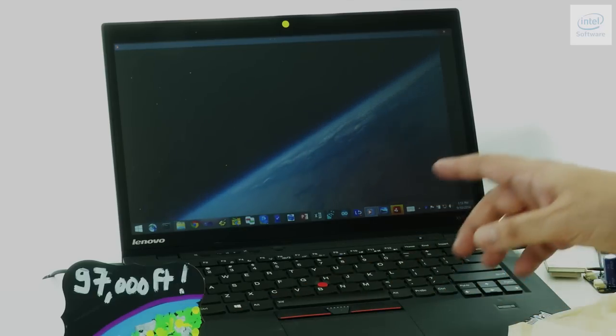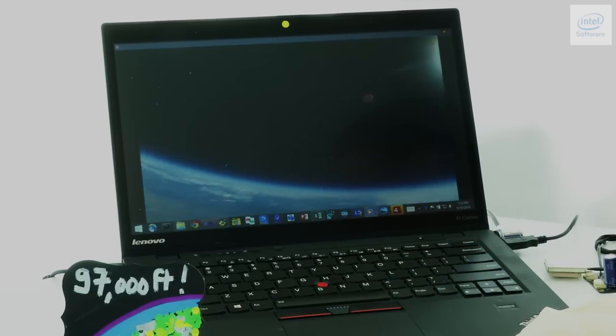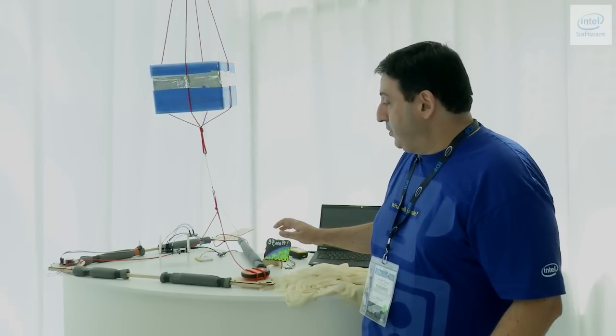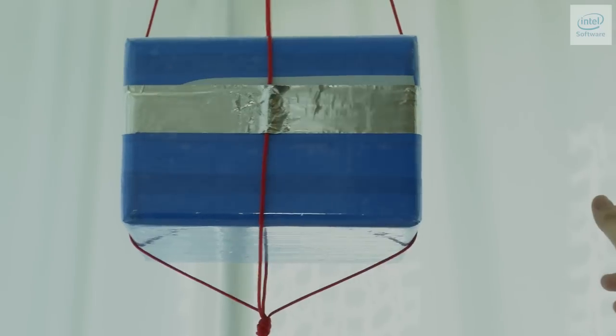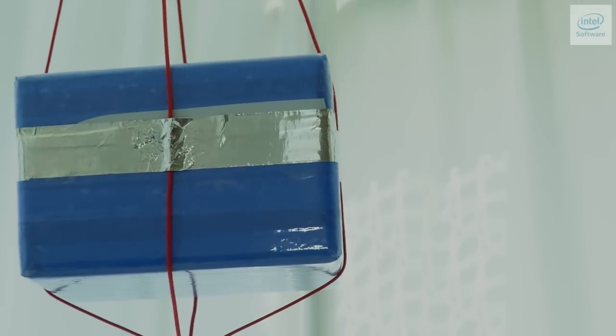This is a Galileo new space project and the goal was to send a Galileo one board as high as possible. We reached 97,000 feet which is almost 19 miles. The project was composed of a Galileo one board, some sensors, and a logger that was running in the box that you see here to isolate it from temperature.